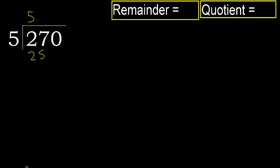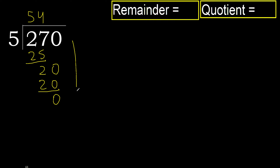Subtract 2, next 20. 5 multiplied by 5 is greater, multiplied by 4 is 20. 30 is not greater. Subtract 0. Next — that is not a number, therefore finish. 270 divided by 5 is done.